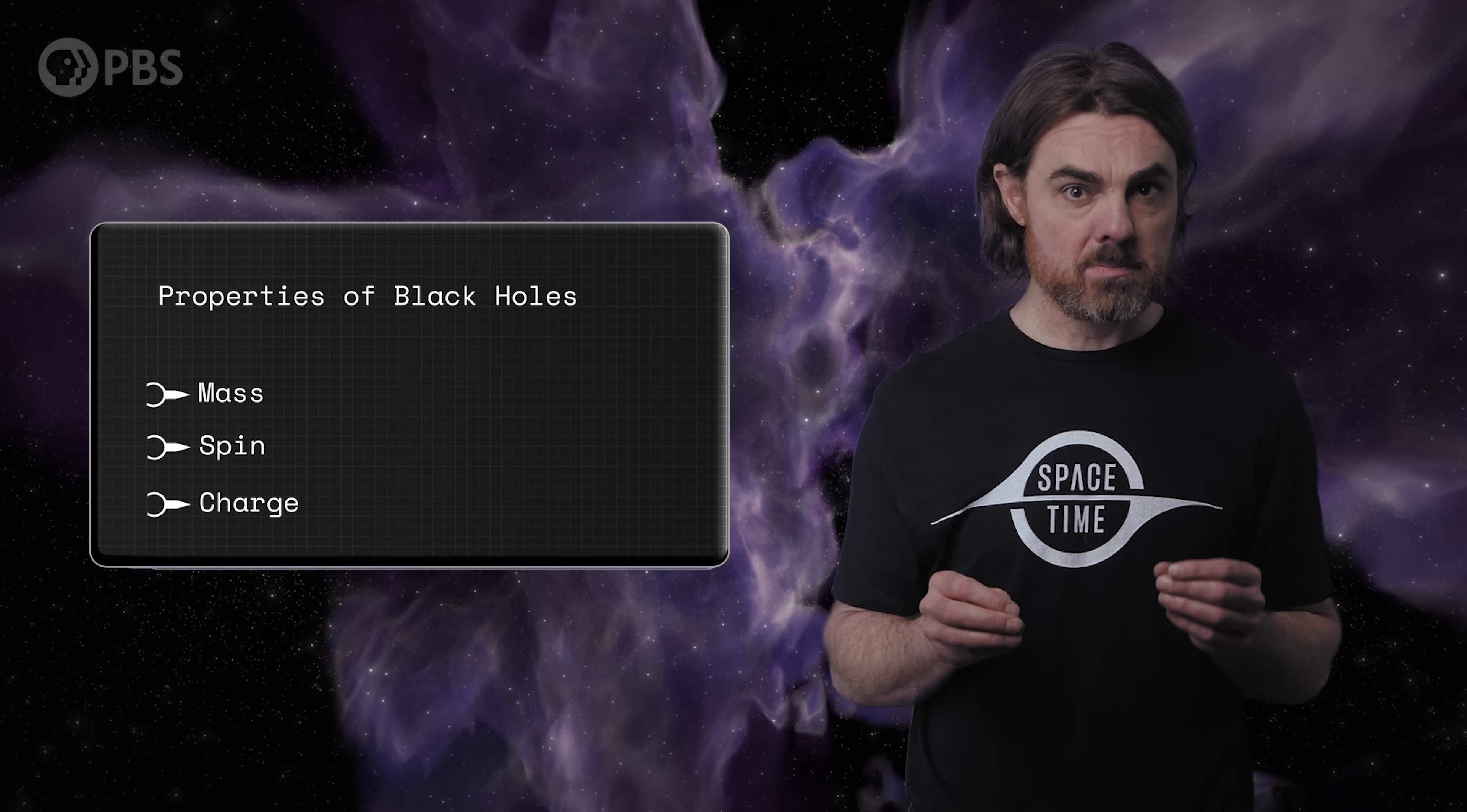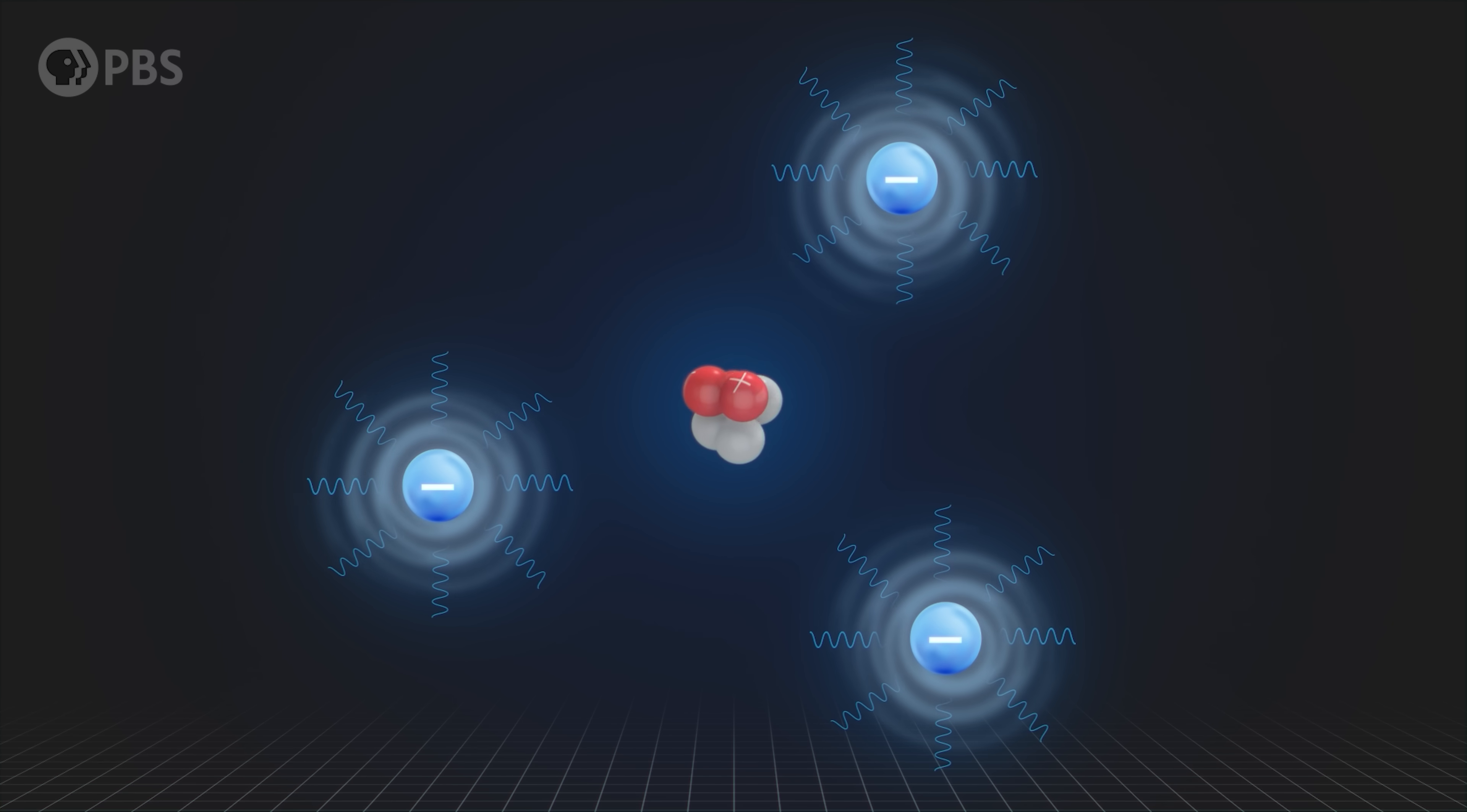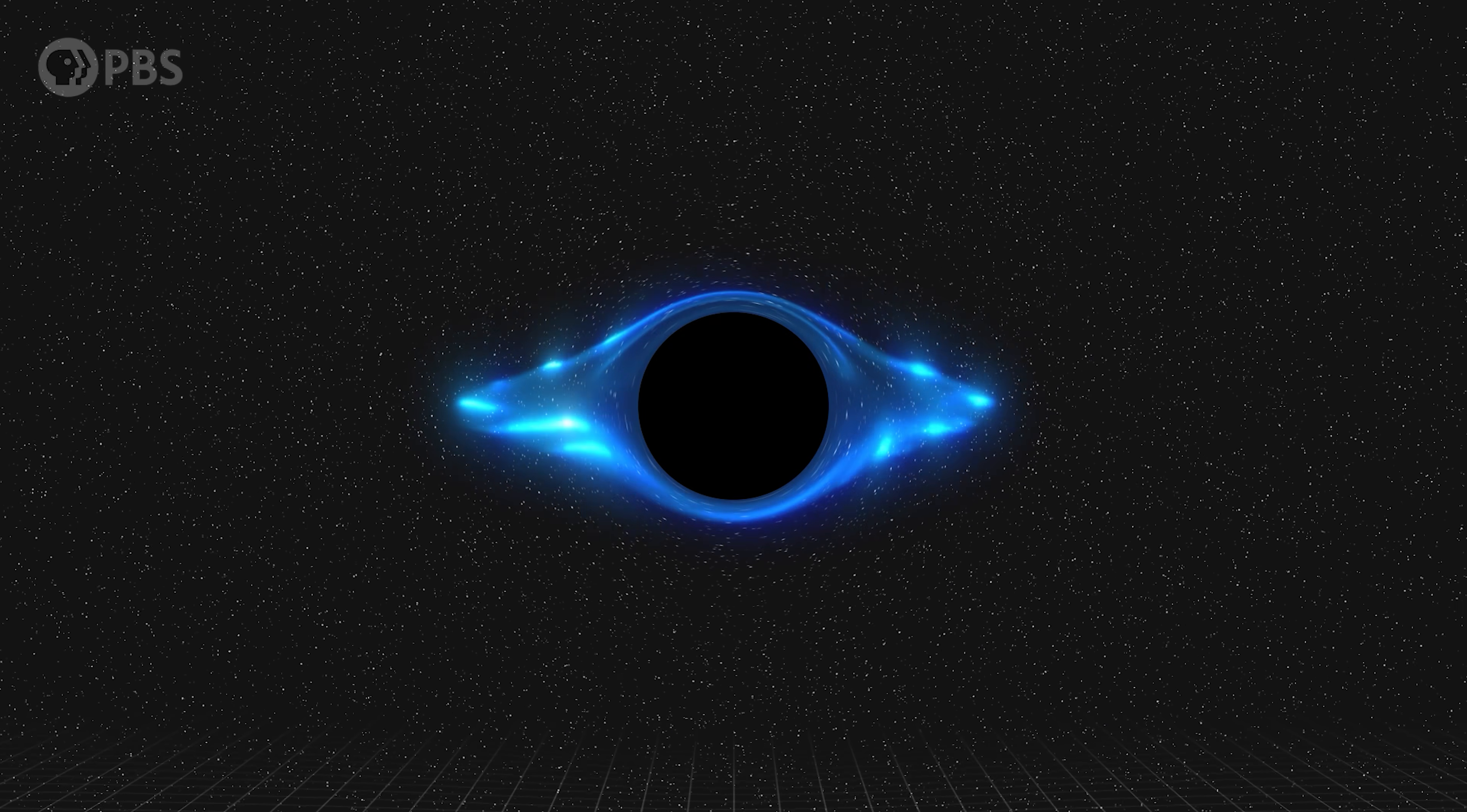We covered mass and spin, but what about charge? Normally when we think about black hole charge, we think about electric charge, the stuff that electrons and protons have that shocks you when you drag your feet on the carpet and then touch a doorknob. Black holes have a hard time holding onto electric charge because they quickly attract the opposite charge from matter in the surrounding universe and neutralize. They are in contact with the cosmic doorknob, if you like.